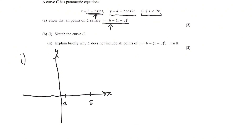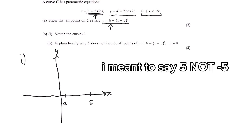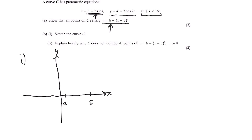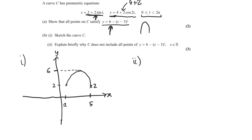Now we can find what the y values are going to be at x equals 1 and x equals 5 by substituting into this equation. Sub in 1, we get y equals 2; sub in 5, we also get y equals 2. Looking at this equation, it's a negative quadratic, so it's going to have this shape, and we can join up these points accordingly. The maximum value of y is when cos t equals 1, giving 4 plus 2 equals 6, so we can place the max point here. This maximum occurs when x equals 3, so we mark that here.